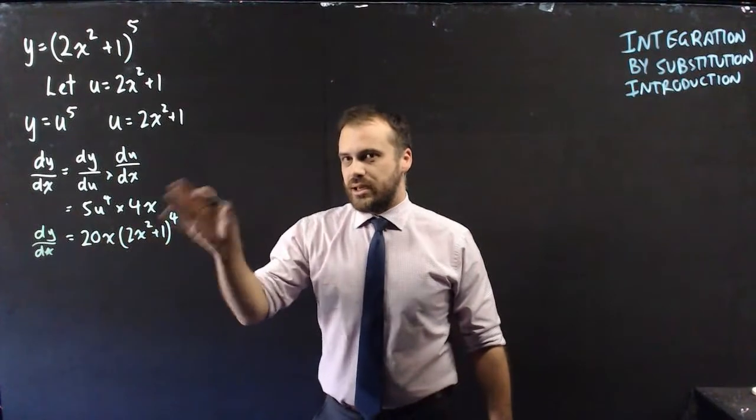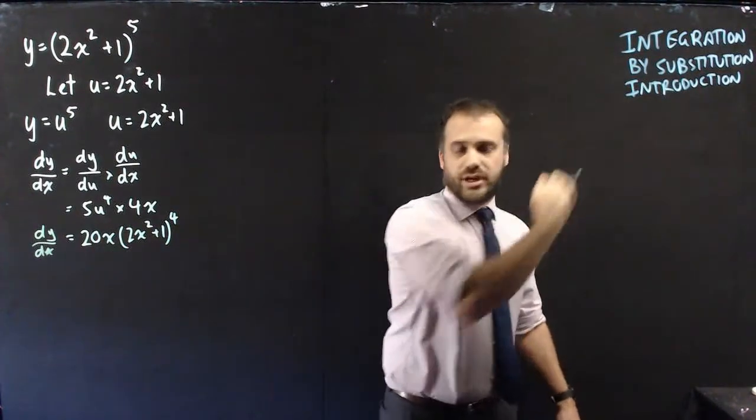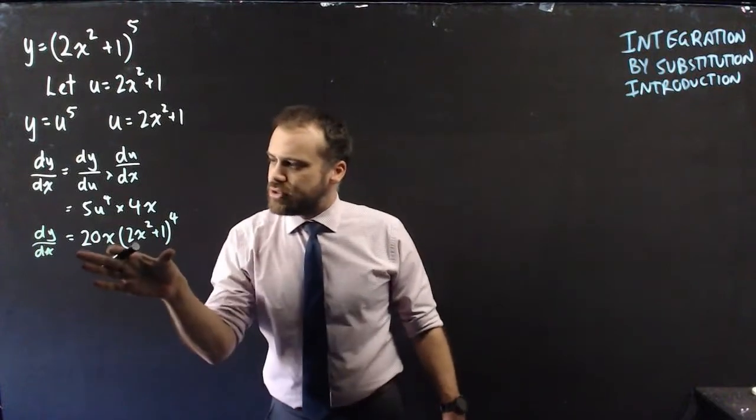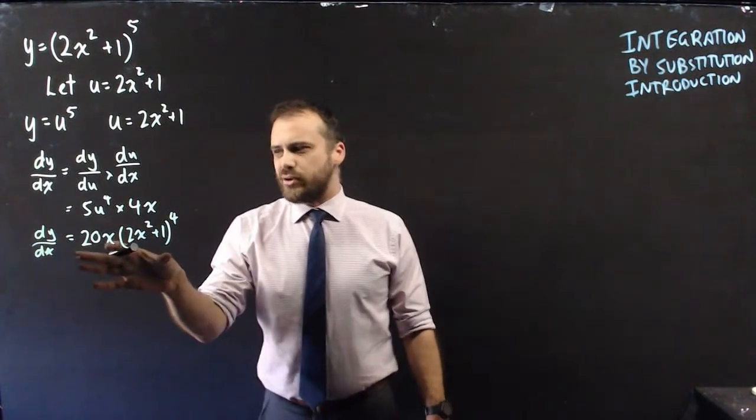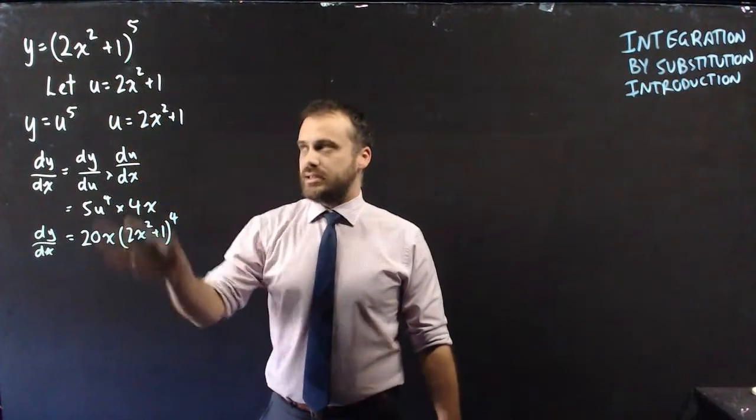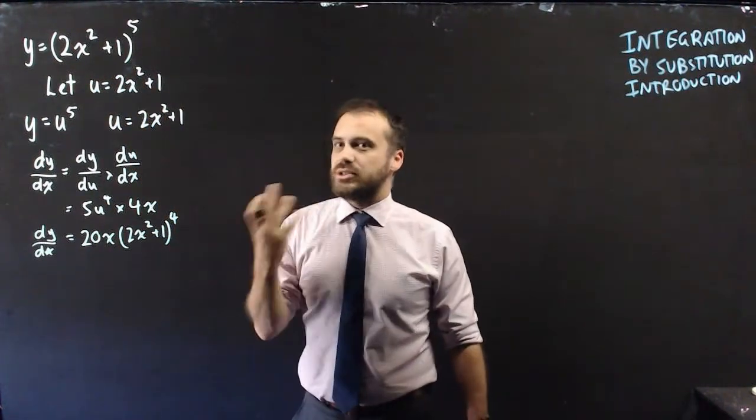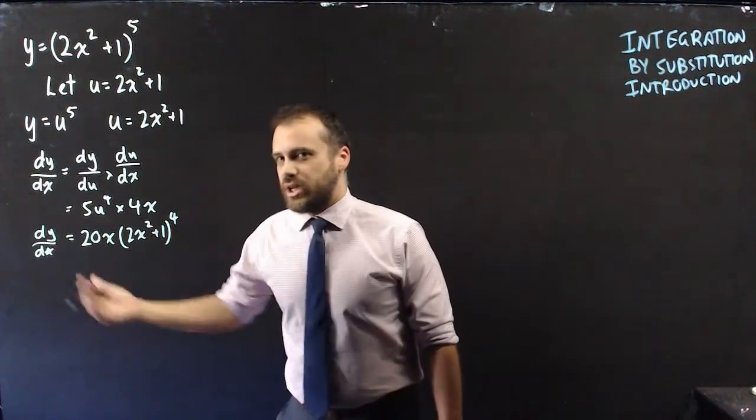Now we're doing integration which is the reverse of the derivative. If we were to find the integral of that we know that we're going to end up back here somehow. That's what integration by substitution is going to allow us to do - kind of reverse the chain.